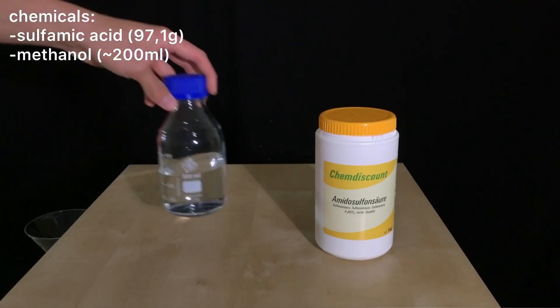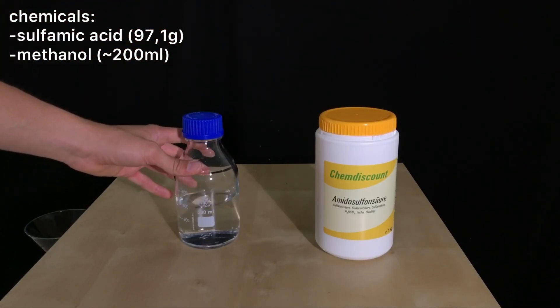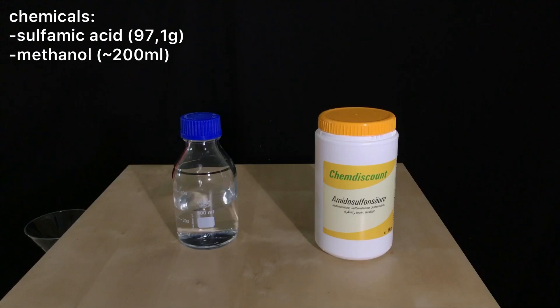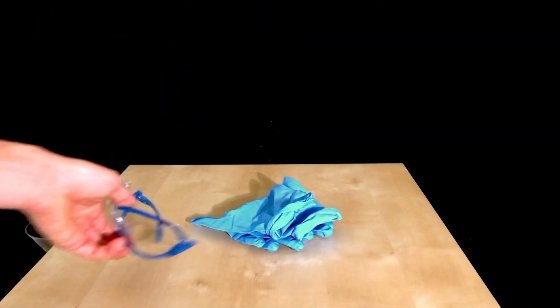Welcome back everyone. Today we are going to make ammonium methyl sulfate. For this we are going to use 97.1 grams of sulfamic acid and 200 milliliters of methanol, which is a huge overkill.